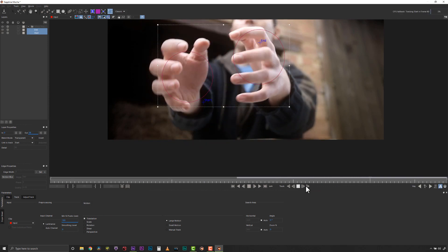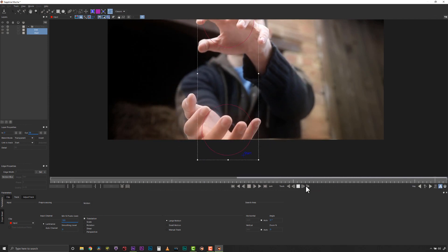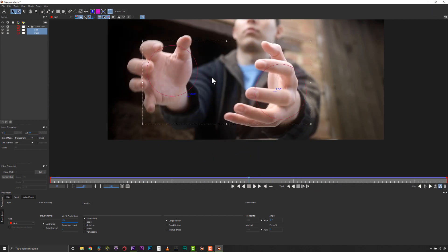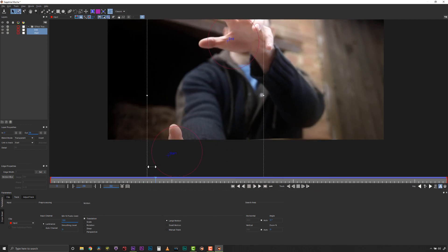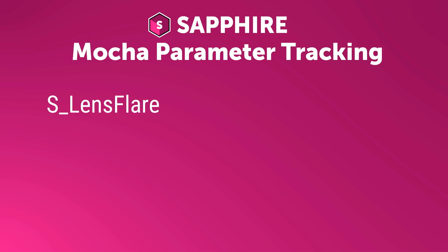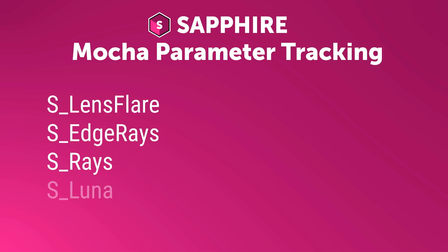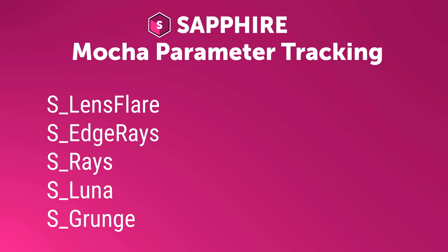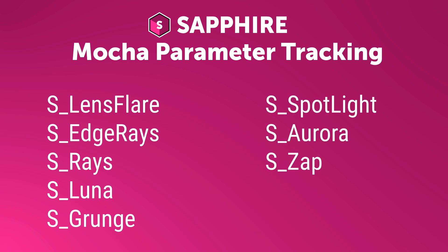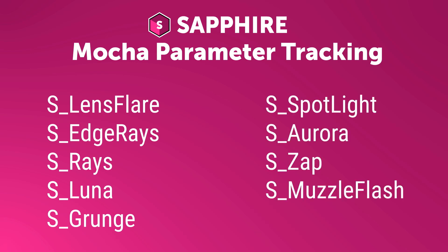Sapphire features powerful Mocha planar tracking to drive parameters inside of Lens Flare, Edge Rays, Rays, Luna, Grunge, Spotlight, Aurora, Zap, Muzzle Flash, and Free Lens.